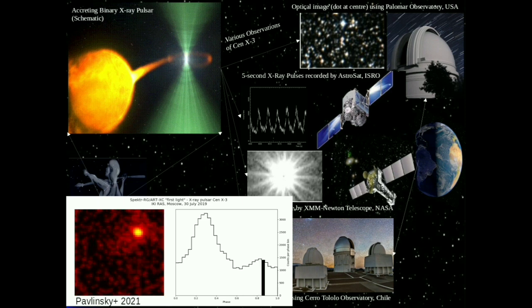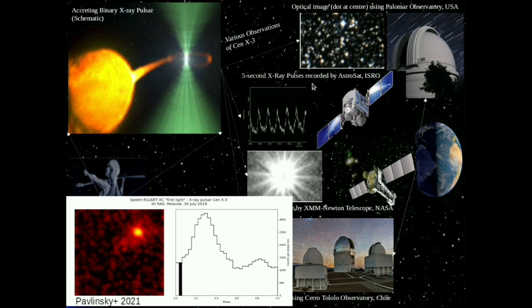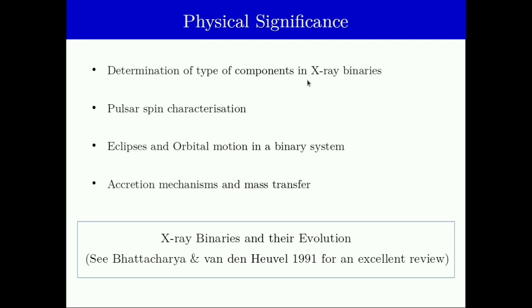So a lot of physics can be done with these systems, but the imaging analysis doesn't take us very far. So we require alternate techniques like timing analysis of its light curves. One can determine the type of components in the binary systems. One can characterize the spin, the orbital motion, see the eclipses, and also get insight into the mass transfer mechanism. Overall, all these contribute to furthering our understanding of X-ray binaries and their evolution at a big picture level. I'll touch upon these one by one.